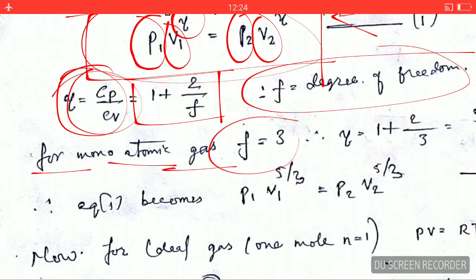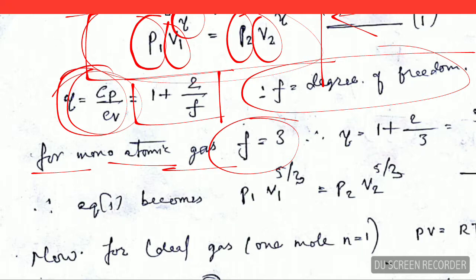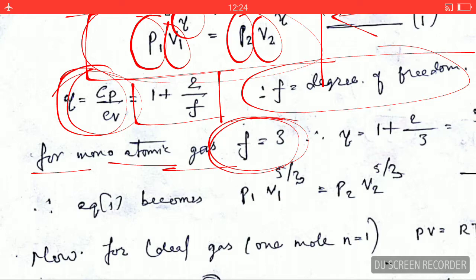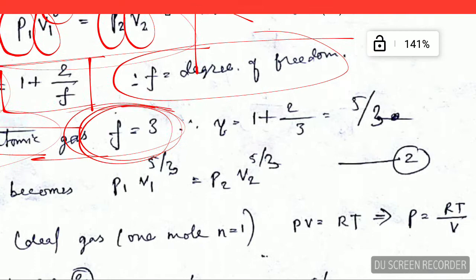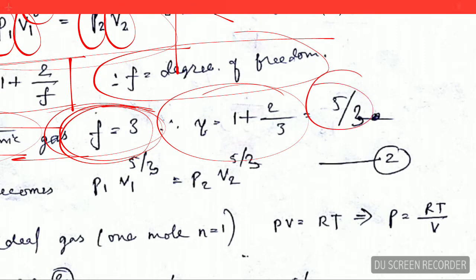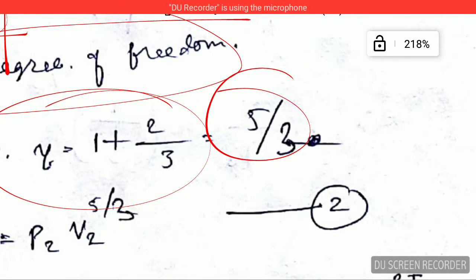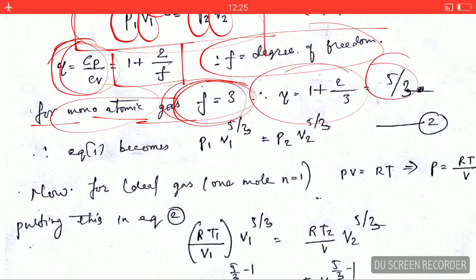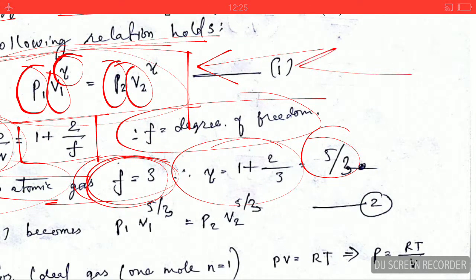For a monatomic gas, the atom can translate in three directions, so the degree of freedom is 3. Rotations and vibrations are neglected. Therefore γ equals 5/3 for a monatomic gas.